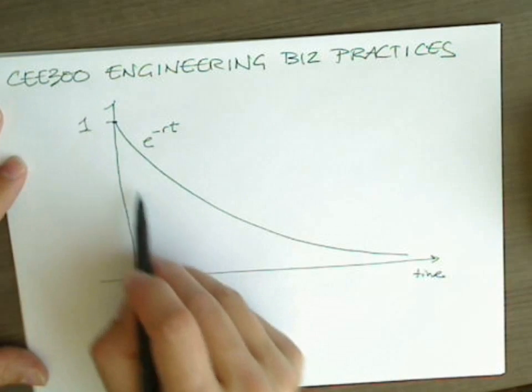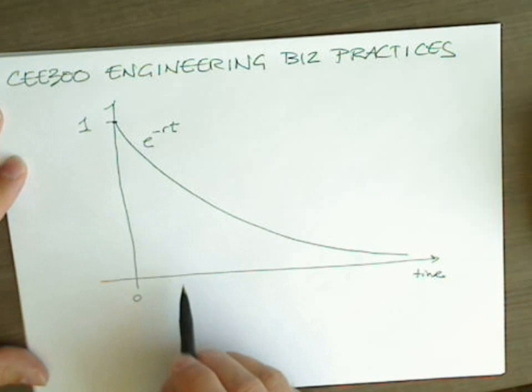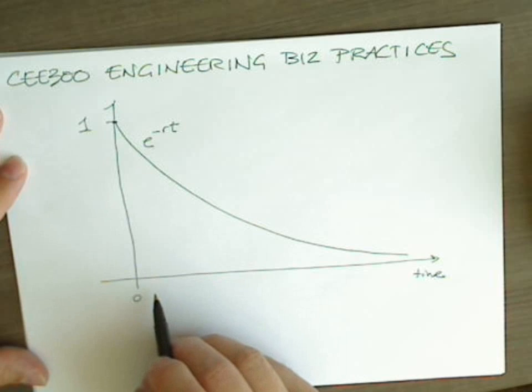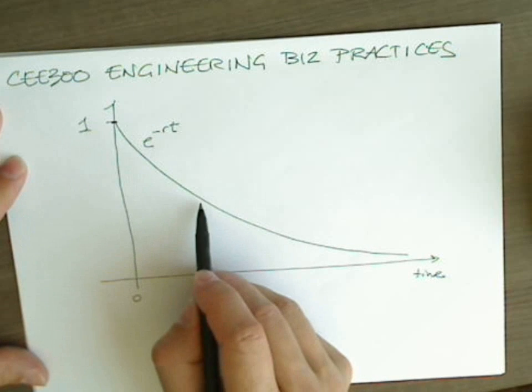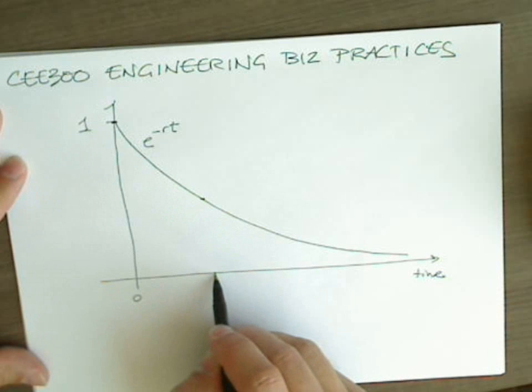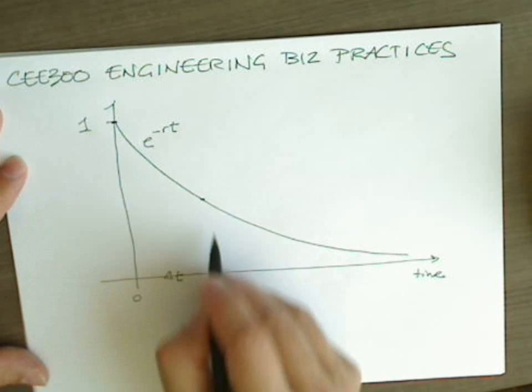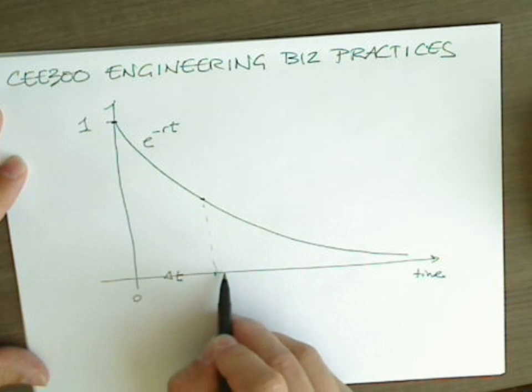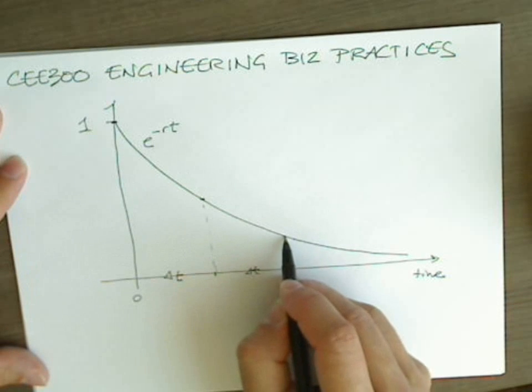This is a logical discount factor in the sense that, remember I said it was the same one as radioactive decay, the difference between this amount and this amount proportionally over some interval, we'll call this interval delta t, is going to be the exact same proportionally as this delta t, and I'll show you what I mean by that.